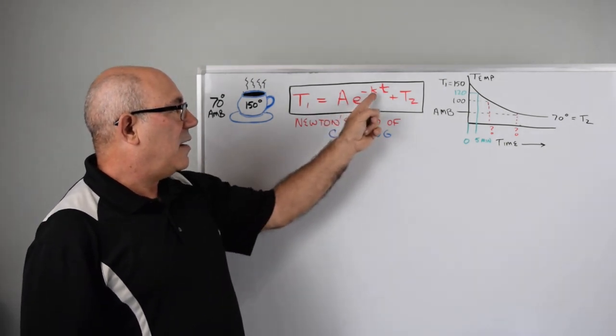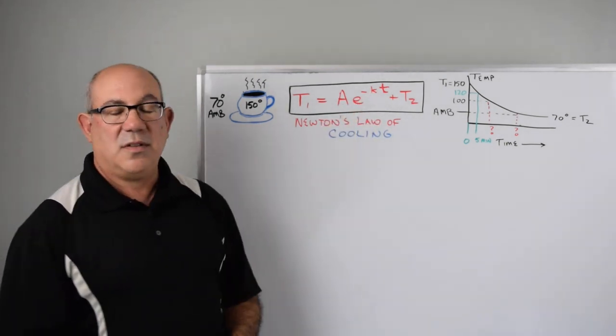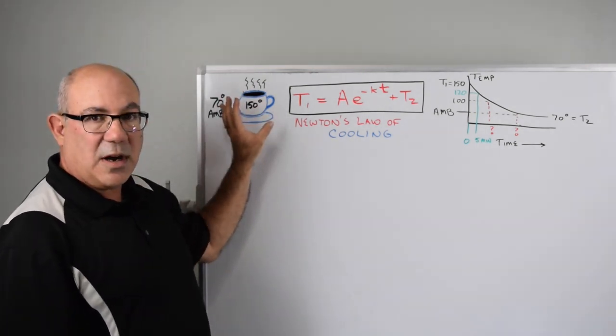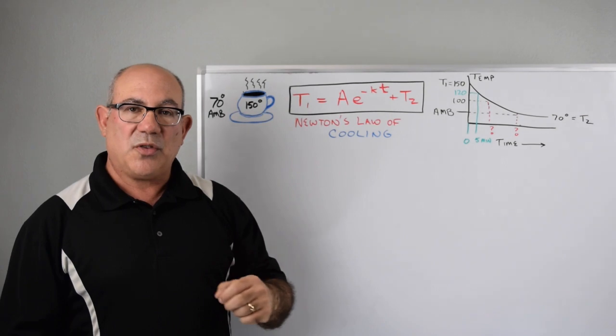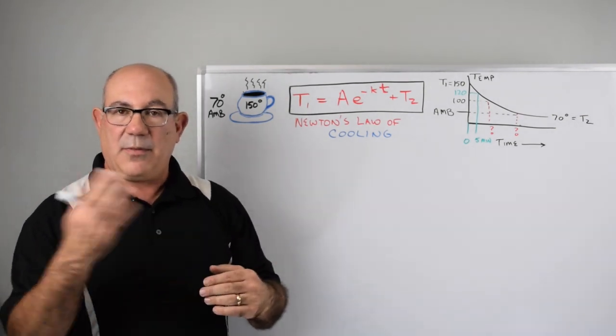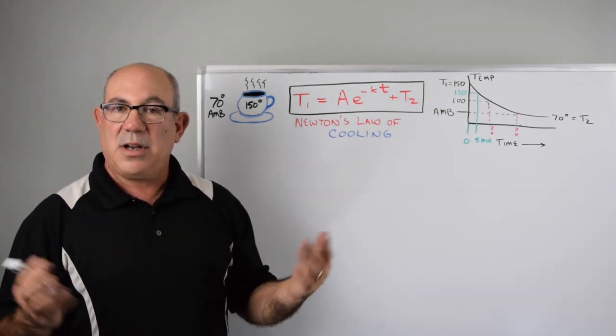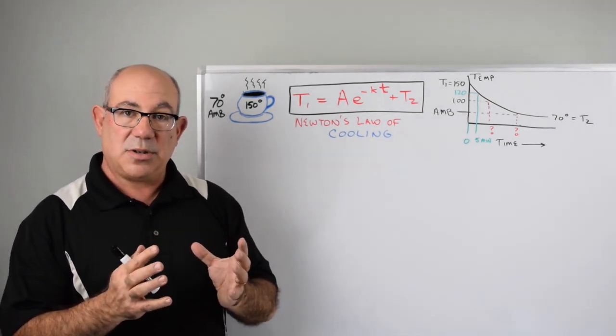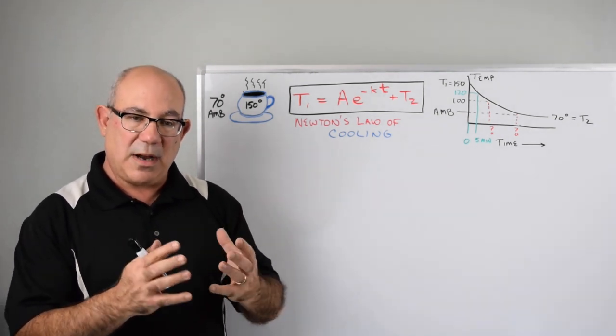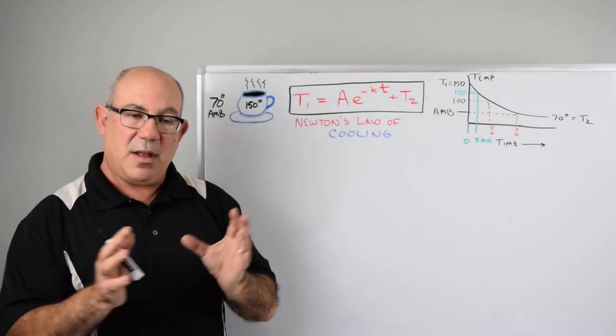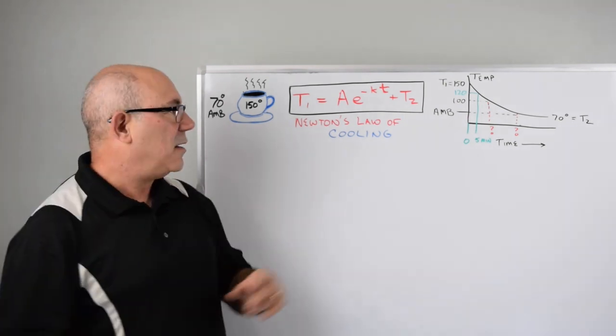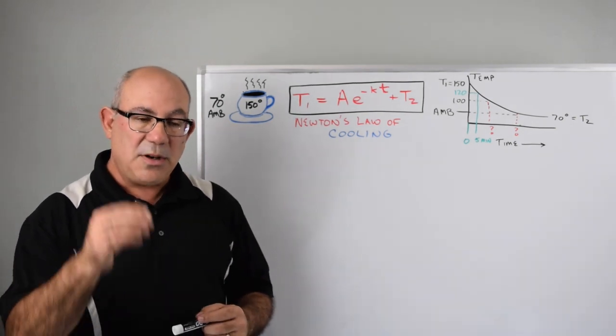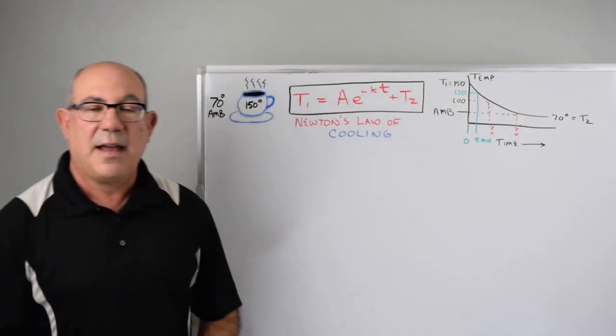The constants are A and K. A is the heat transfer constant surrounding the surface area of this cup, the thickness of the walls, maybe how much air might be flowing over it from air conditioning - whatever factors are determining how quickly the temperature will go down are all lumped into that A constant. This K constant is the exponential coefficient. Notice this is a negative exponent, that's why it's dropping down like that.